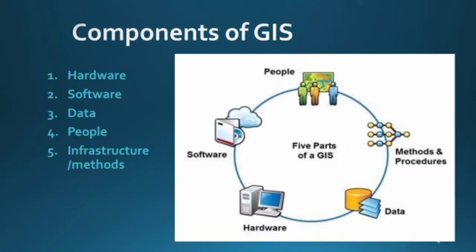There are mainly five components of GIS: first, hardware and software; second, data; third, people; and fourth, infrastructure or methods. These are the components that jointly make the GIS process possible.